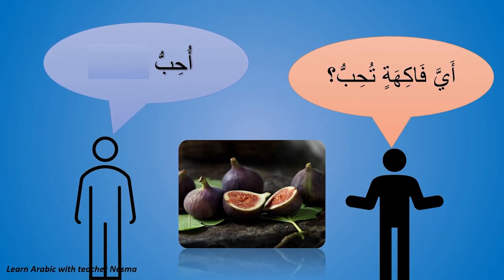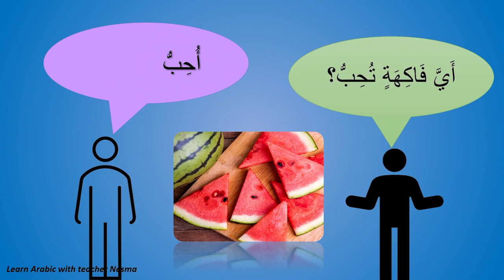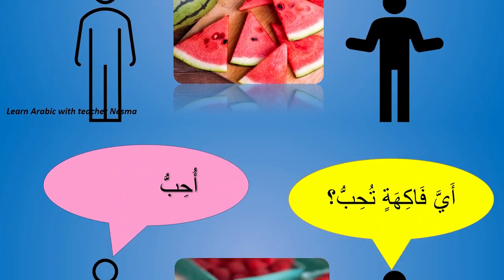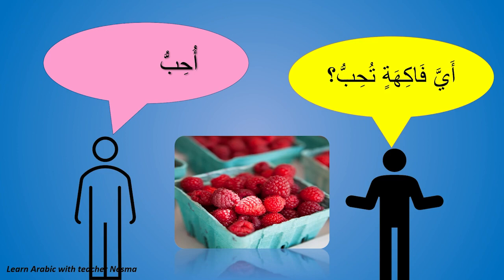Wa al-ān — aya faakahatin tuhibu? Which fruit do you like? Auhibu tīn — I love the figs. Aya faakahatin tuhibu? Auhibu al-bittīkh — I like watermelon. Auhibu al-tūt. And you, tell me in the comments: aya faakahatin tuhibu? Ma'assalamah.